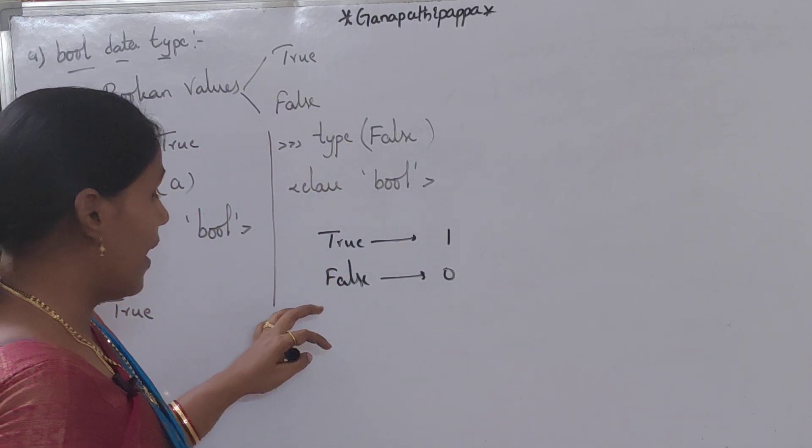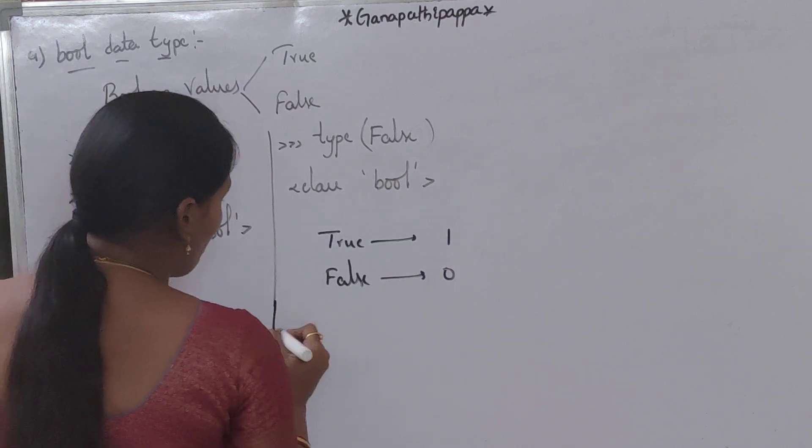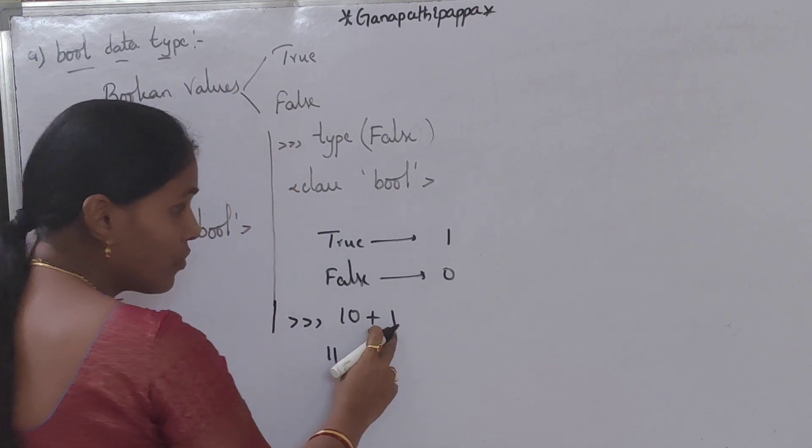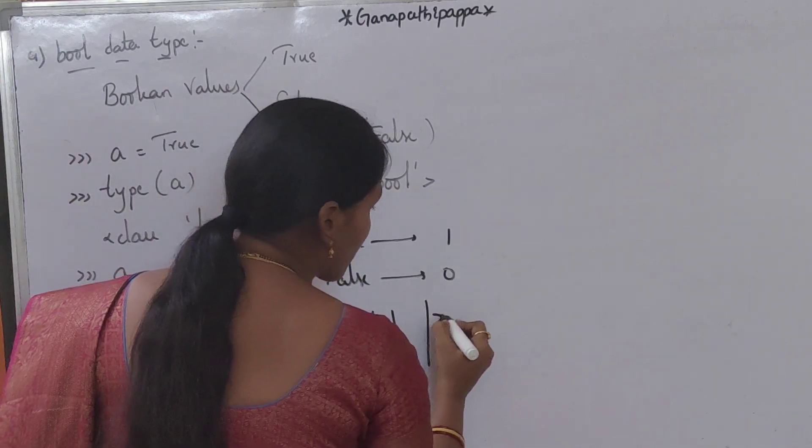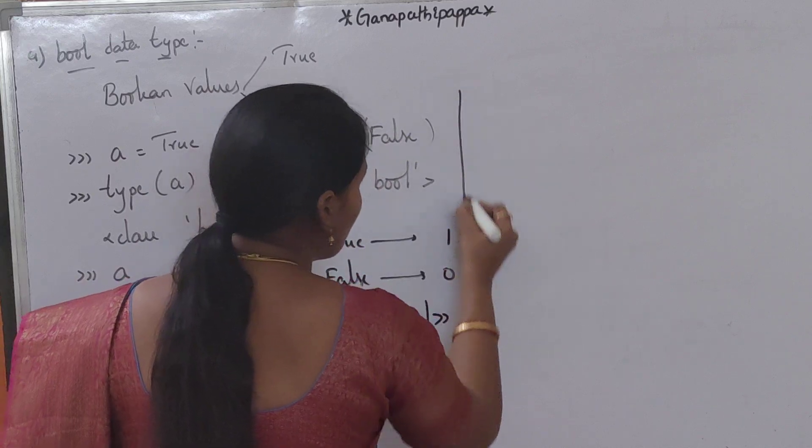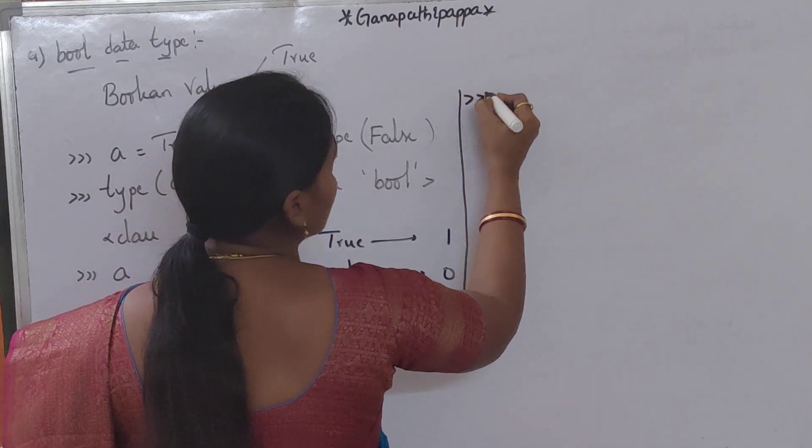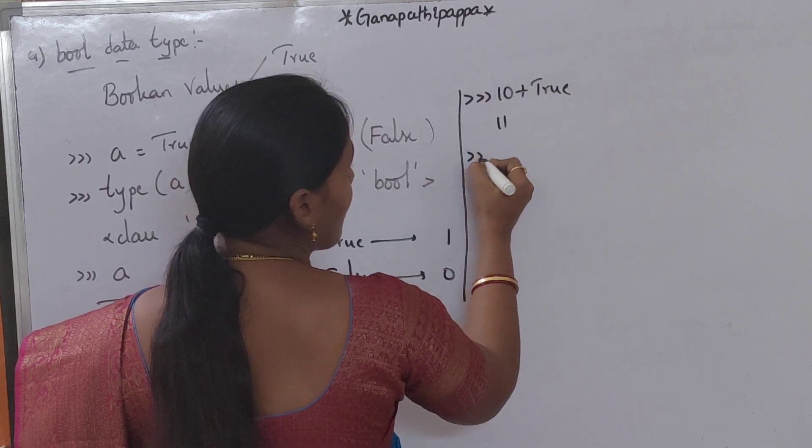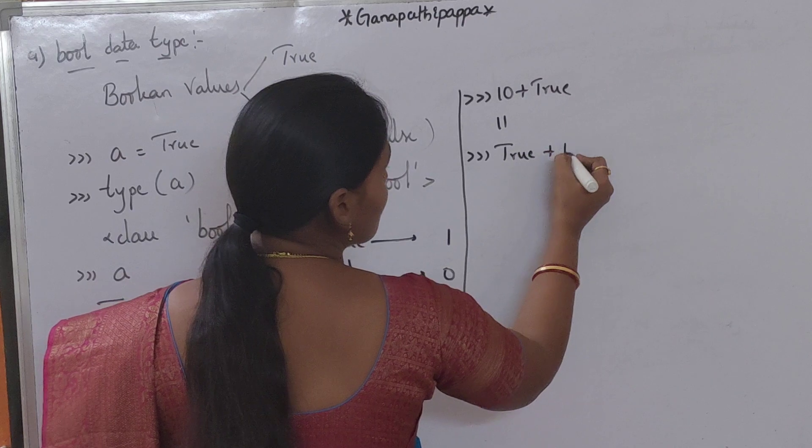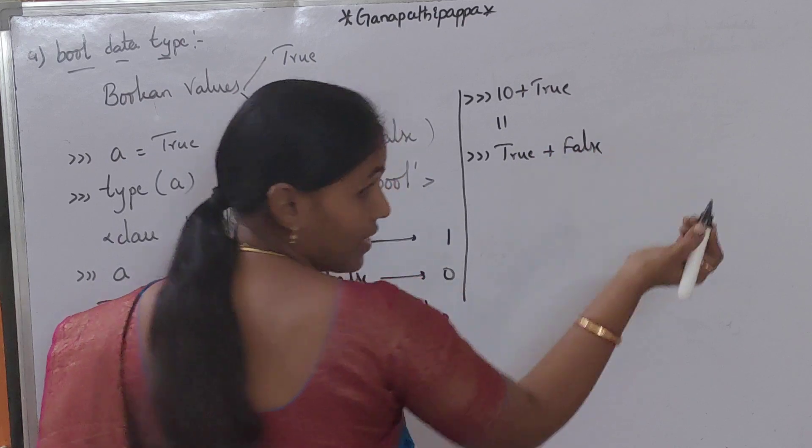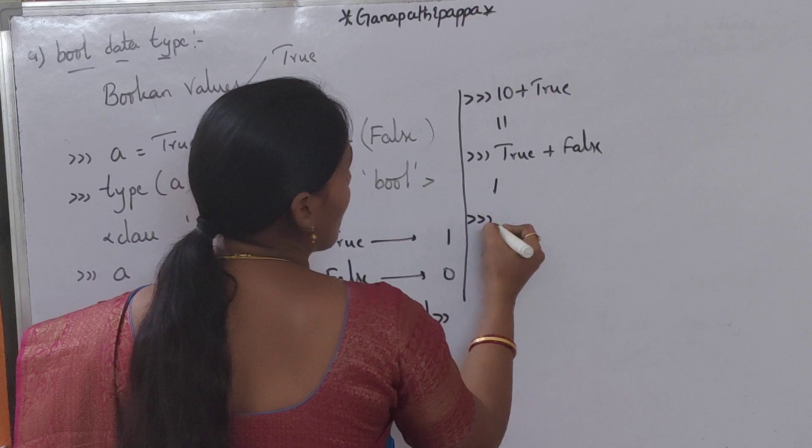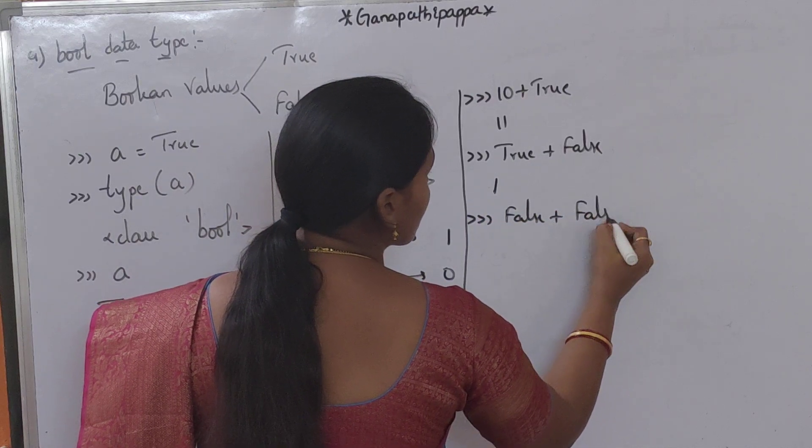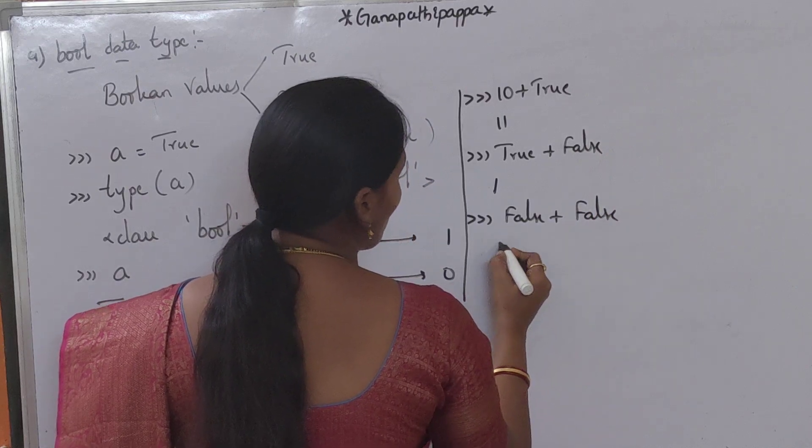We will take any mathematical operations. 10 plus 1 returns 11. Instead of 1, we will use true also, so 10 plus true, we will get 11. And true plus false, we will get 1. And false plus false, we will get 0.